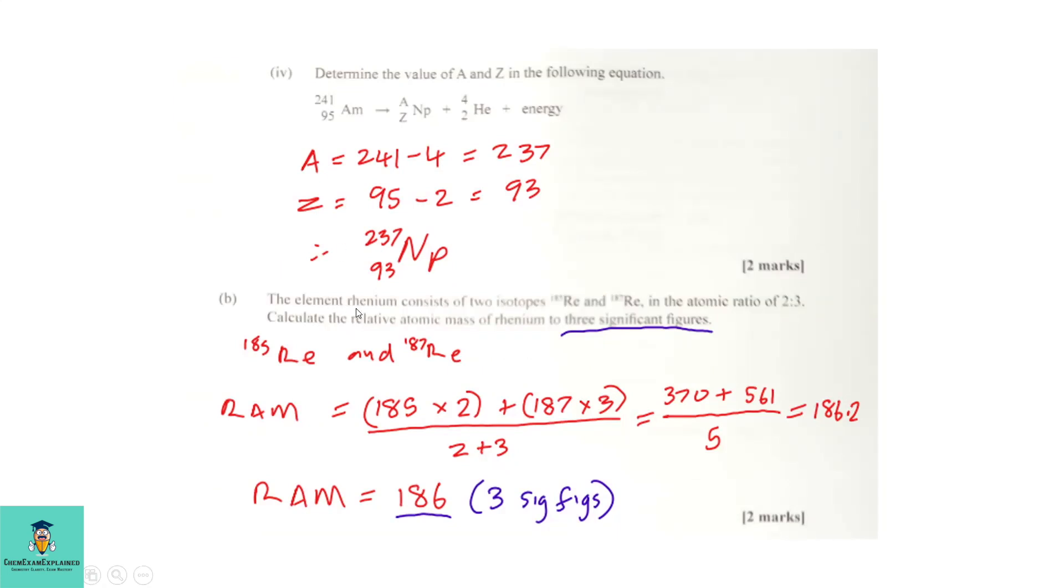Part B. The element uranium consists of two isotopes, uranium-185 and uranium-187, in the atomic ratio of 2 to 3. Calculate the relative atomic mass of uranium to three significant figures. This is important in your final answer. So how do we do the calculation? Well, it is the mass number times the ratio of 2, plus the mass number of the other isotope, times the ratio of 3, divided by the total ratio.